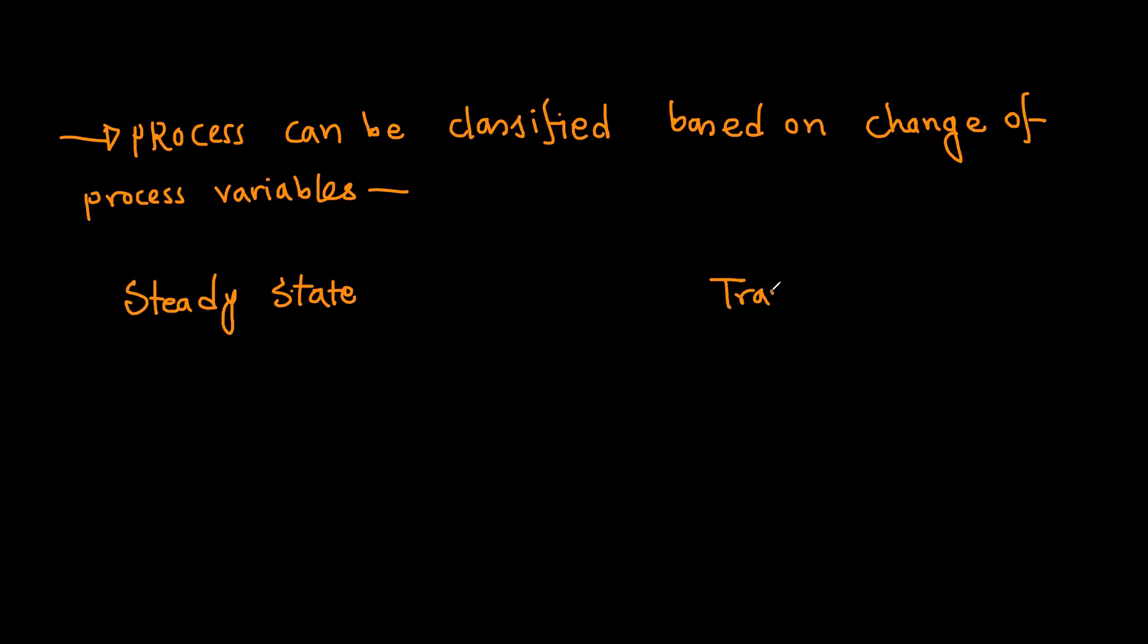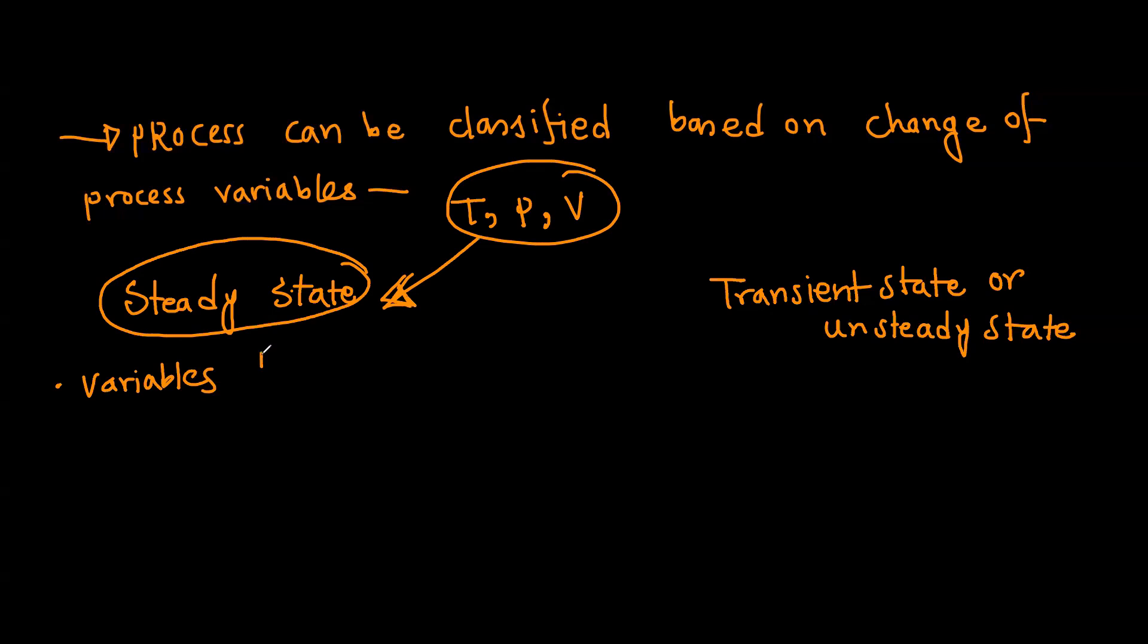Processes can be classified based on change of process variables (T, P, V). We have steady state and transient state or unsteady state. Our process variables are temperature, pressure, and volume. If these don't change, then it's steady state - that means variables don't vary with time. If changes occur with time, then it's a transient process.